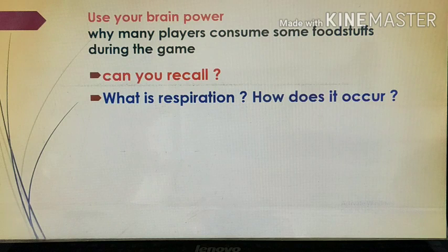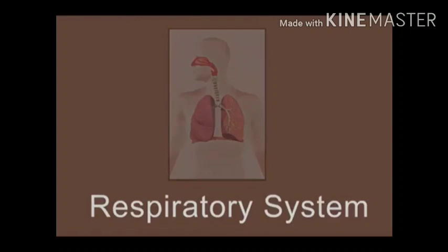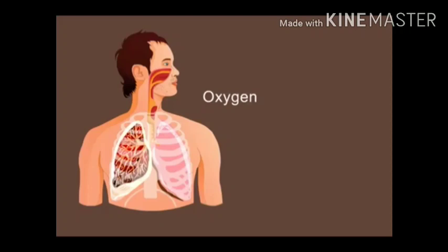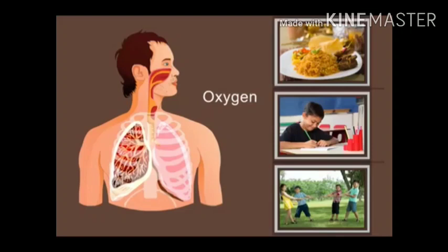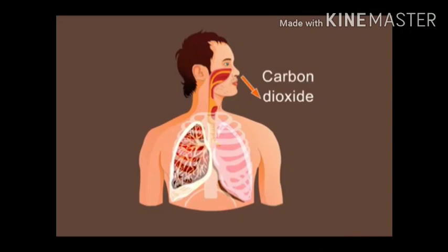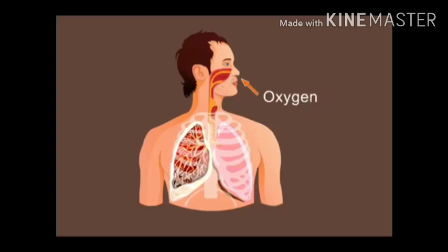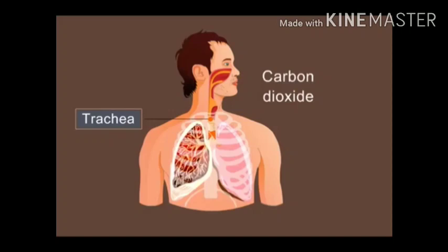Let us see what respiration is and how it occurs. All human beings breathe in oxygen, which helps break down the food absorbed by the body. The food gives us energy to work or play. We breathe in oxygen and breathe out carbon dioxide. The breathing in and breathing out is done by the respiratory system. Air is filtered by tiny hairs inside the nose so that no dust enters. The dust-free air enters the throat, trachea or windpipe, then the lungs, where oxygen is taken by the blood and carbon dioxide is given out. This process is called respiration.